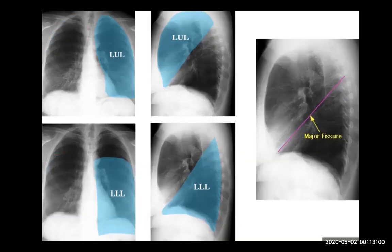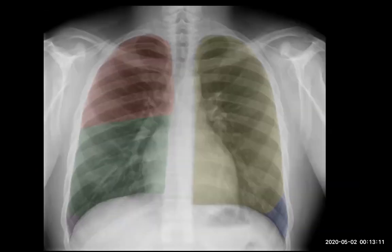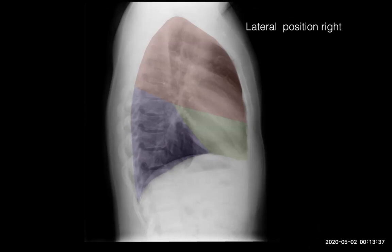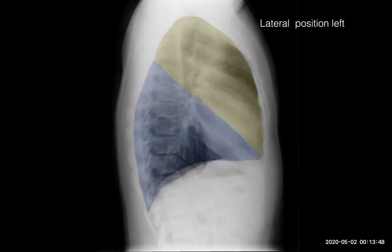On the left side, the lung fields are occupied mostly by the left upper lobe and the left lower lobe, including the lingula, which is located anteriorly. So we have right upper lobe, middle lobe, and lower lobe on the right; and left upper lobe, left lower lobe, and lingula on the left side.